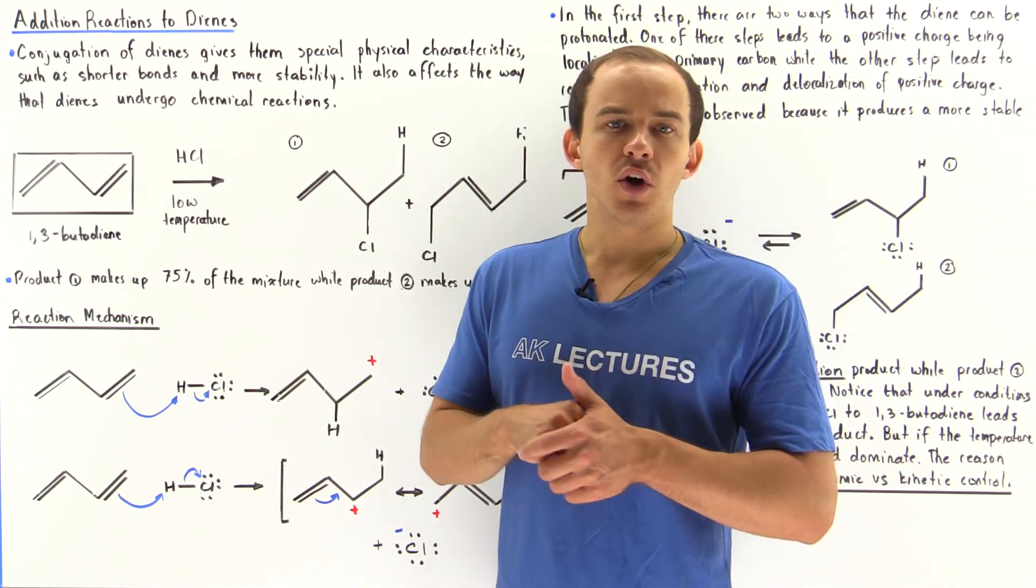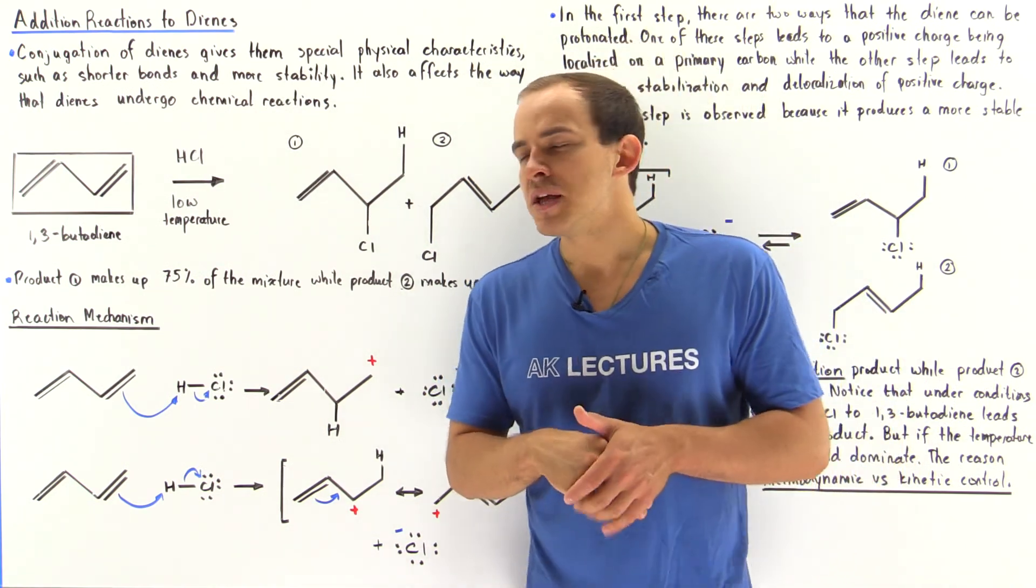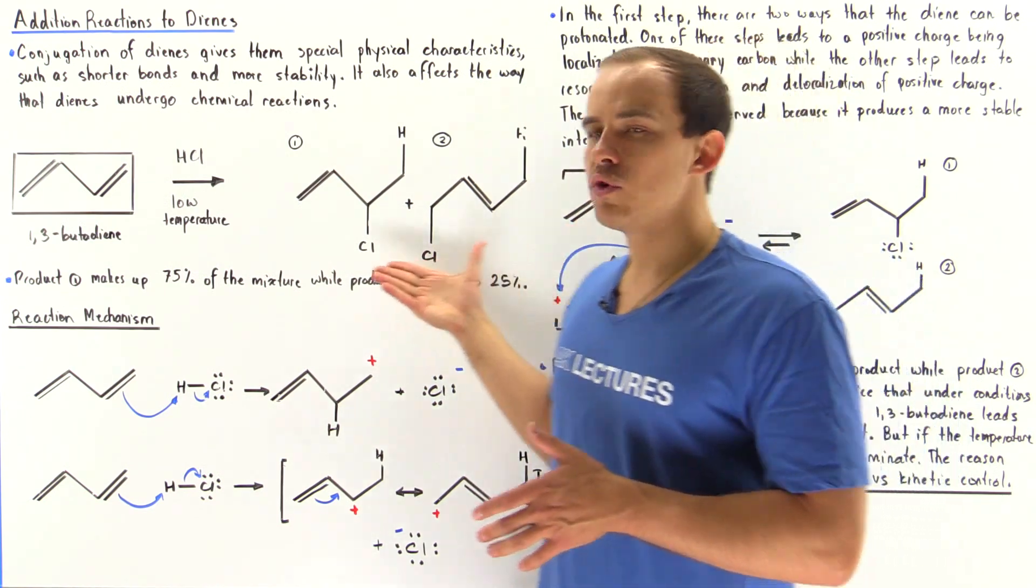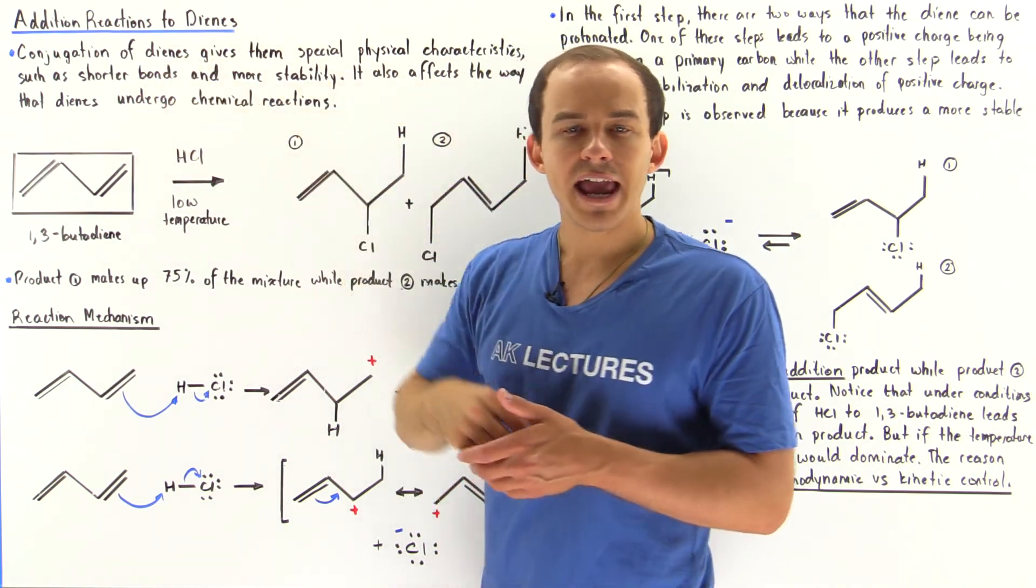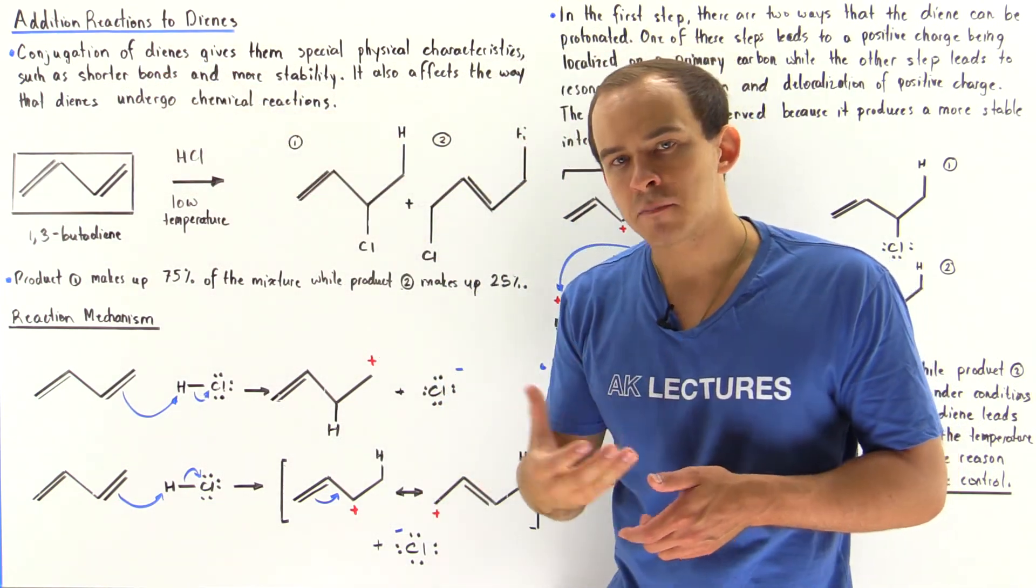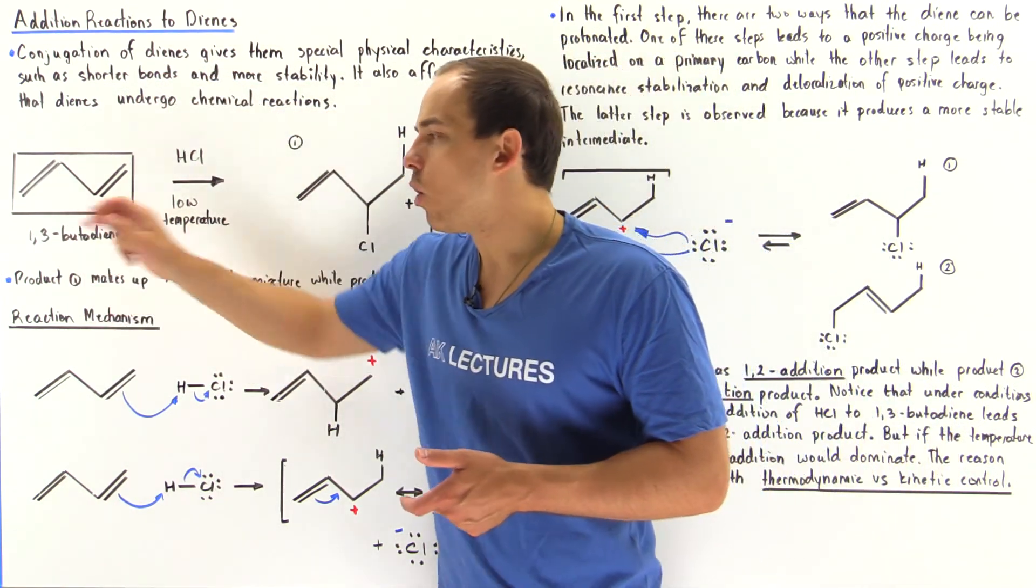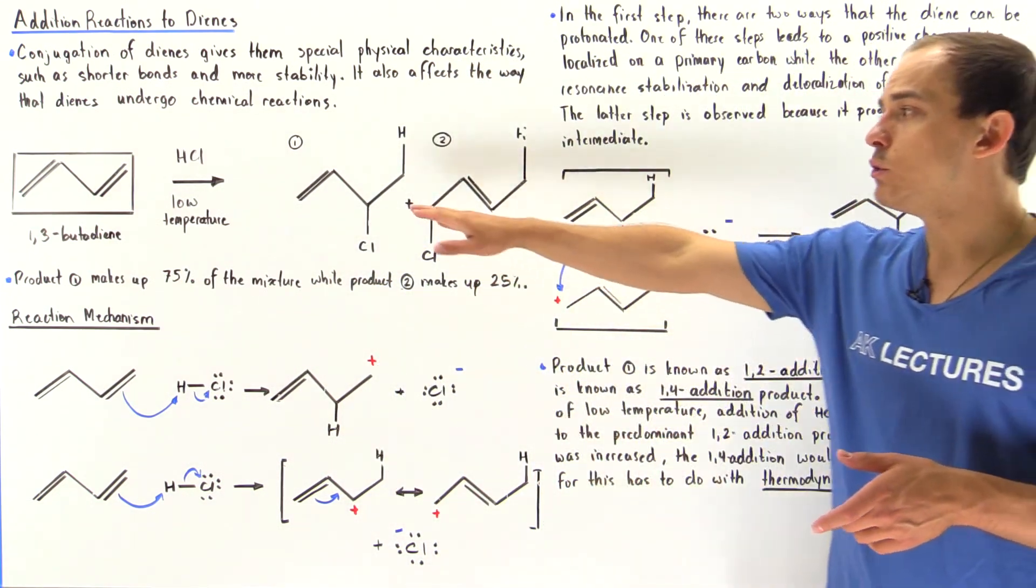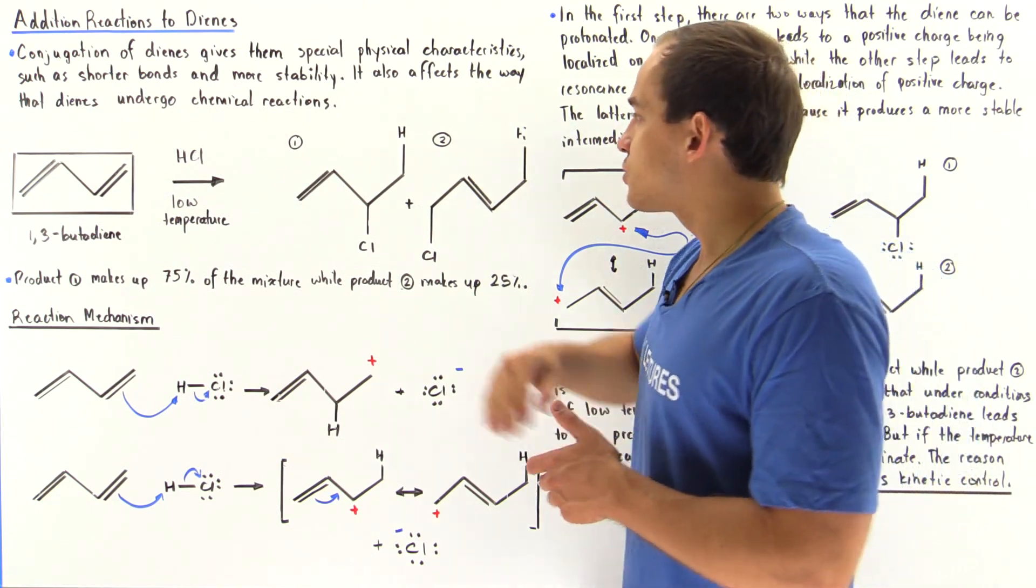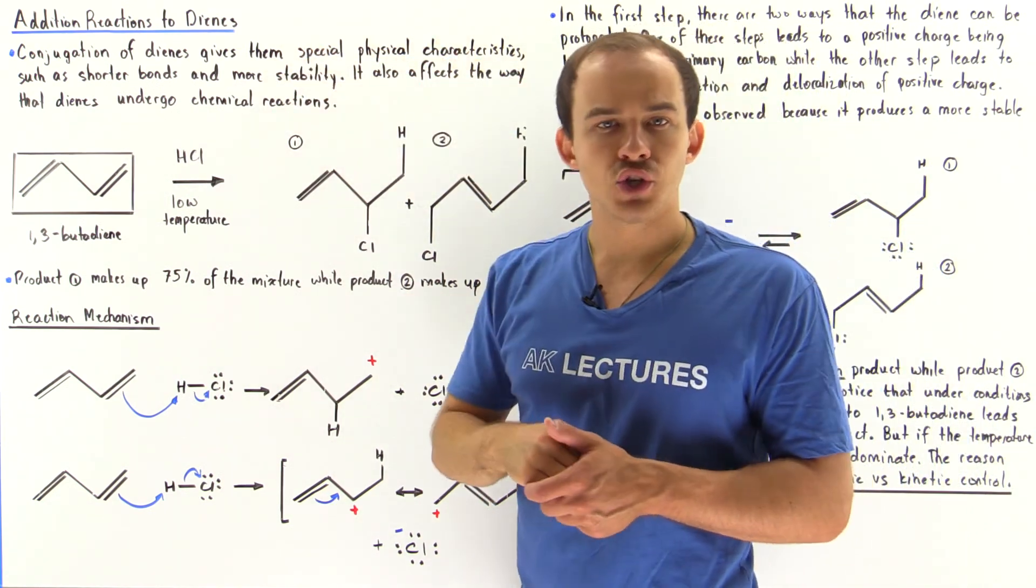Now to see exactly what we mean by that statement, let's take a look at the following reactions. Let's suppose we look at the addition of HCl under low temperature conditions to 1,3-butadiene. The following two products are formed: product 1 and product 2.